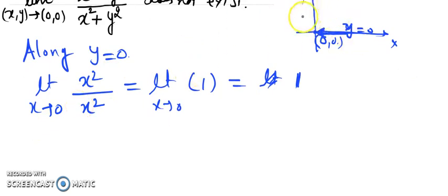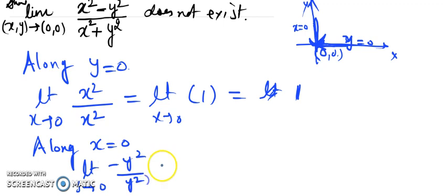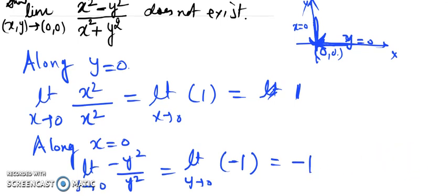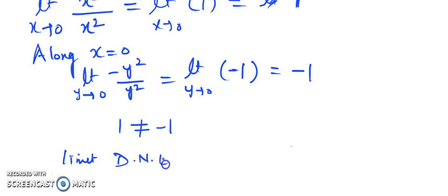Now let's take another path: the y-axis. On the y-axis, x = 0. When you put x = 0, as y tends to 0, the expression reduces to -y²/y², which simplifies to -1. The limit of the constant -1 is -1. So two different paths give different answers: 1 and -1.